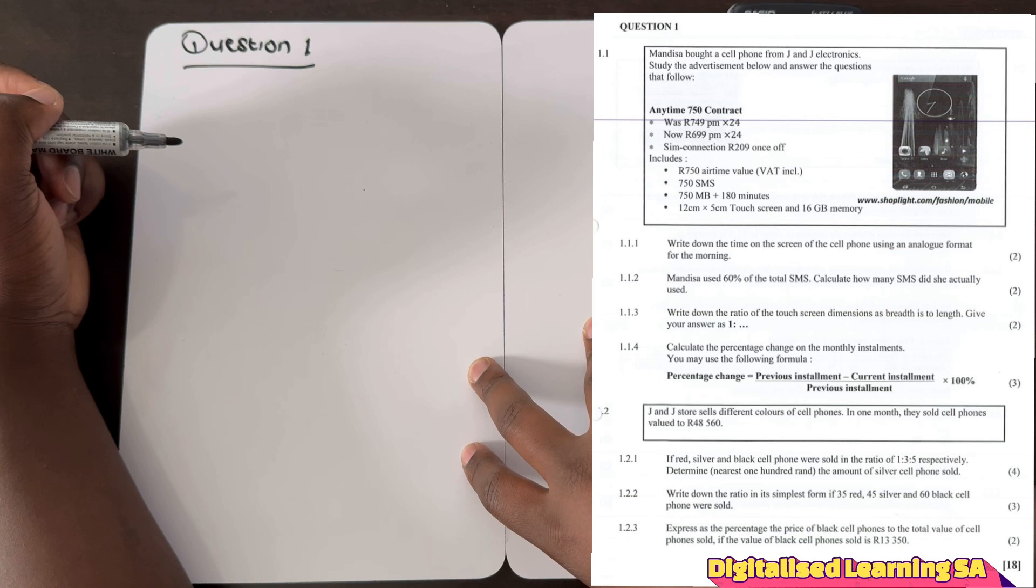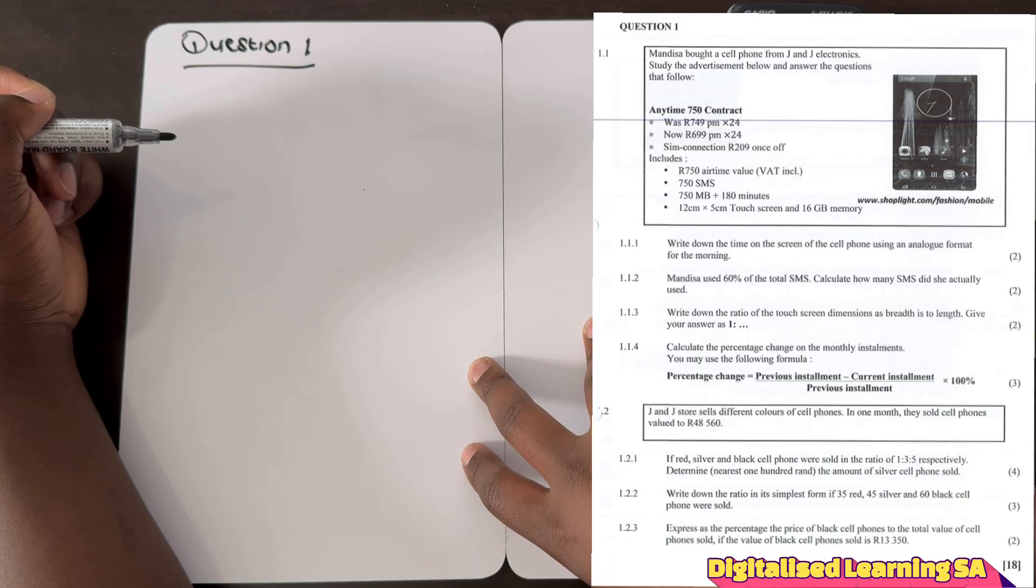The first question, 1.1.1, reads as follows: write down the time on the screen of the cell phone using an analog format for the morning. And 1.1.2 states that Mandisa used 60% of the total SMS, calculate how many SMS did she actually use. And the third one states that write down the ratio of the touch screen dimensions as breadth is to length, give your answer as 1 is to something.